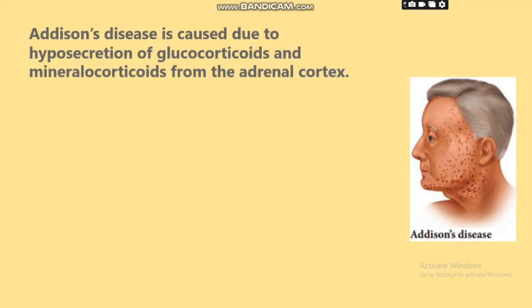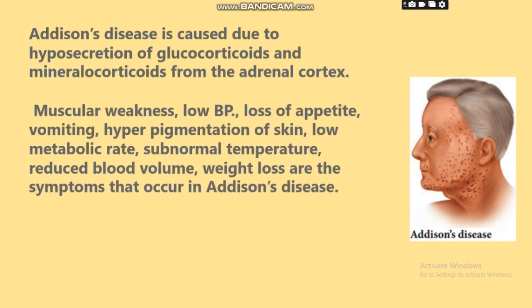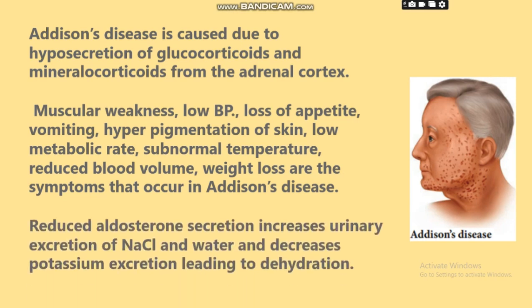Addison's disease is caused due to hyposecretion of glucocorticoids and mineralocorticoids from the adrenal cortex. Muscular weakness, low BP, loss of appetite, vomiting, hyperpigmentation of skin, low metabolic rate, subnormal temperature, reduced blood volume, and weight loss are the symptoms. Reduced aldosterone secretion increases urinary excretion of NaCl and water and decreases potassium excretion, leading to dehydration.